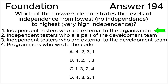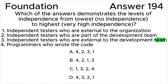Statement 1 — independent testers who are external to the organization — is a very high independence of testing. Statement 2 — independent testers who are part of the development team — is some independence of testing. Statement 3 — independent testers who are external to the development team — is a high independence of testing. Statement 4 — programmers who wrote the code — is no independence of testing.